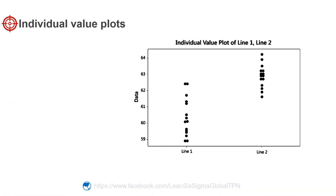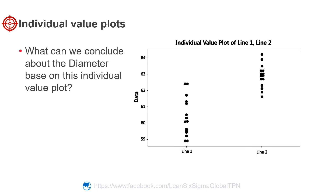Here is an example of the data from line 1 and line 2. What can we conclude about the data based on this individual value plot? We can see that line 2 has samples with a wider variety of dimensions.